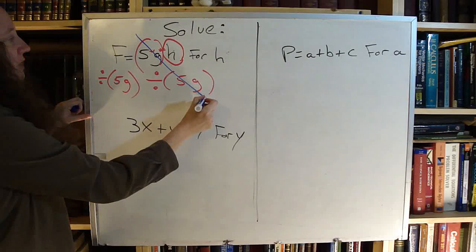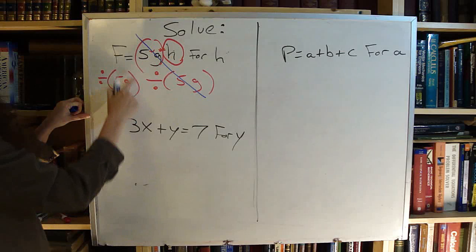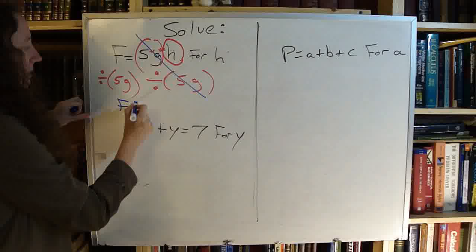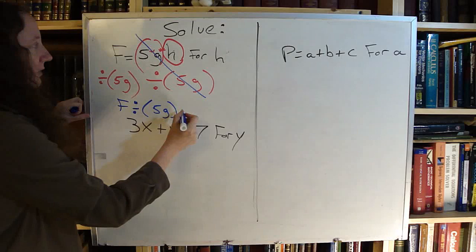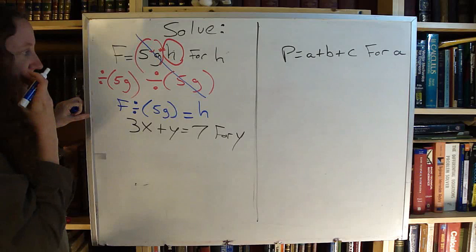So now the 5G cancels the 5G on that side. On this side, I have F divided by 5G all together. So I could write that as F divided by open parenthesis 5G close parenthesis equals H.